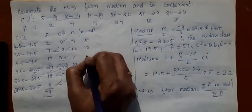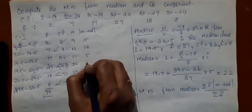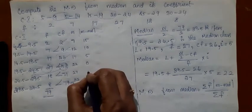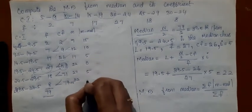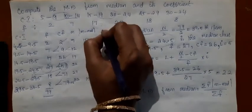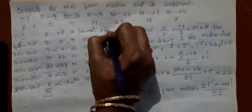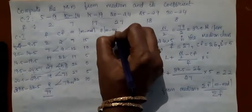12 minus 22. 17 minus 22. 22 minus 22. 27 minus 22. 32 minus 22. Now let us have a column F into M minus median.